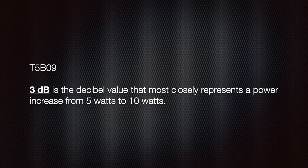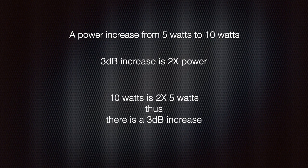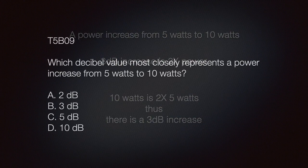We should know that 3 dB is the decibel value that most closely represents a power increase from 5 to 10 watts. We know that going from 5 watts to 10 watts is two times the power, and a 3 dB increase is equivalent to two times the power. The related exam question is: which decibel value most closely represents a power increase from 5 watts to 10 watts? A) 2 dB, B) 3 dB, C) 5 dB, or D) 10 dB.